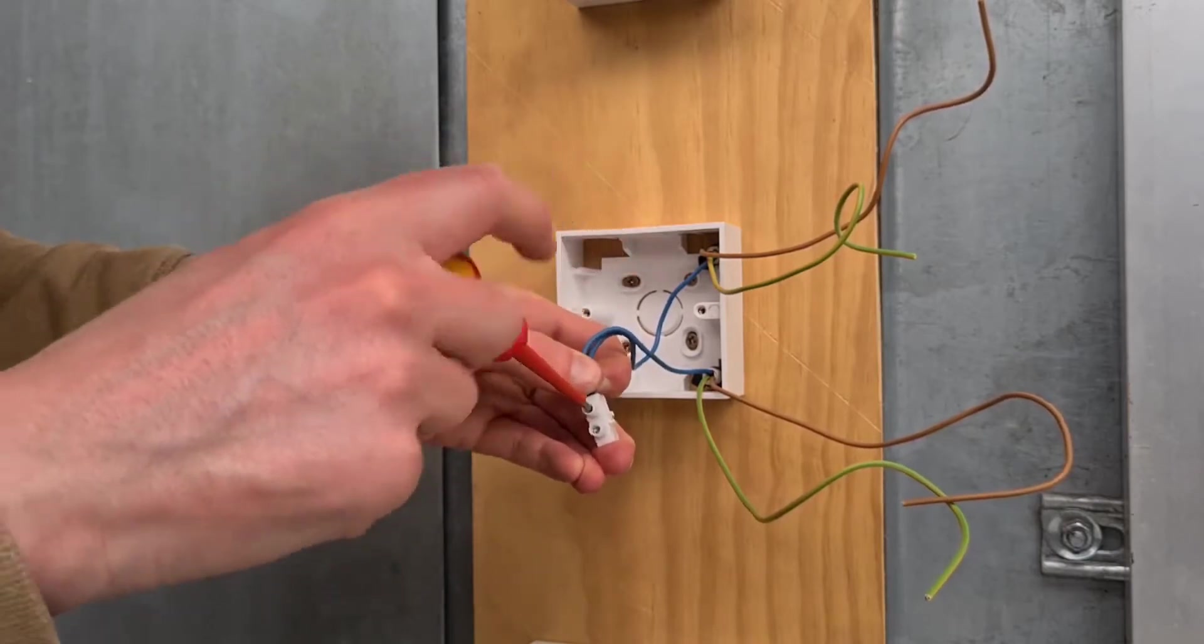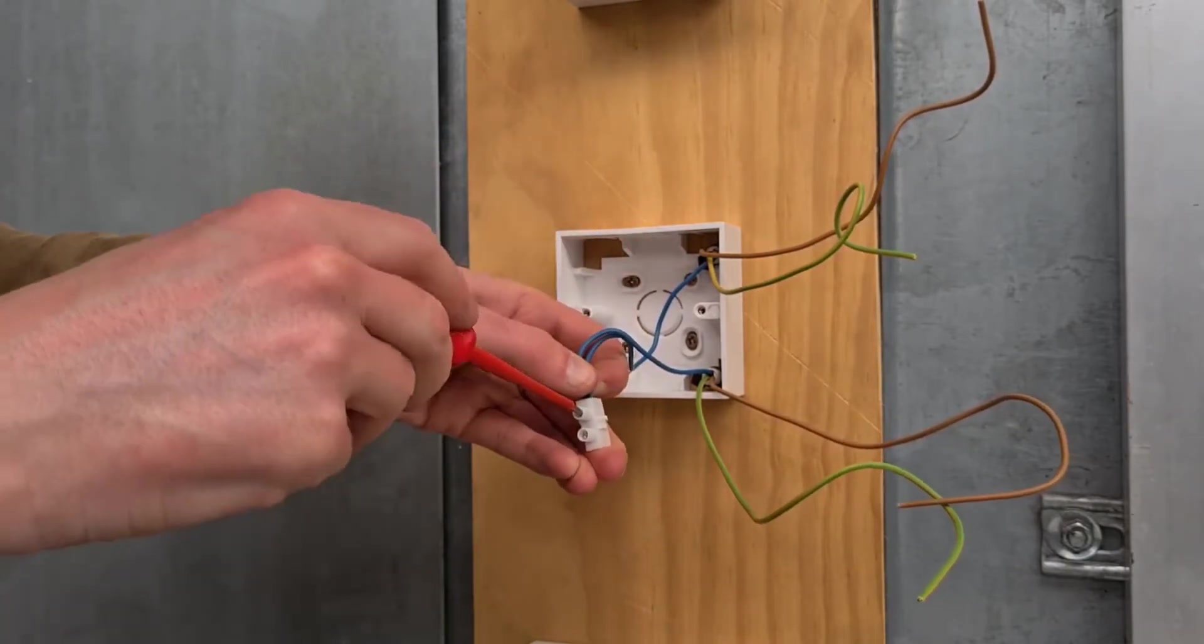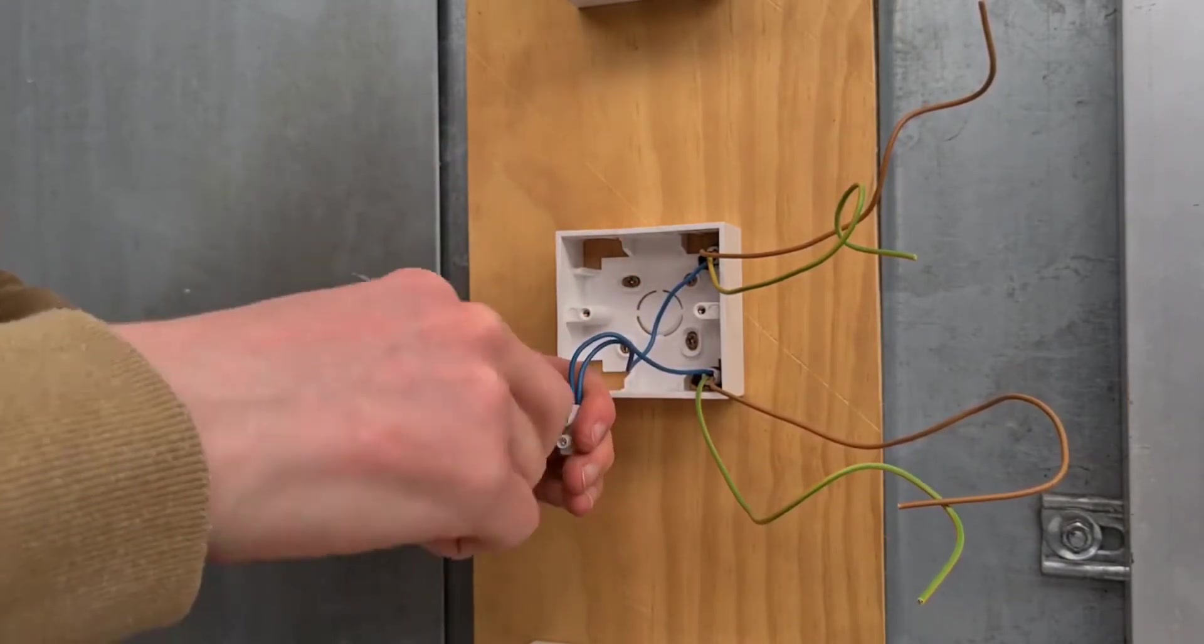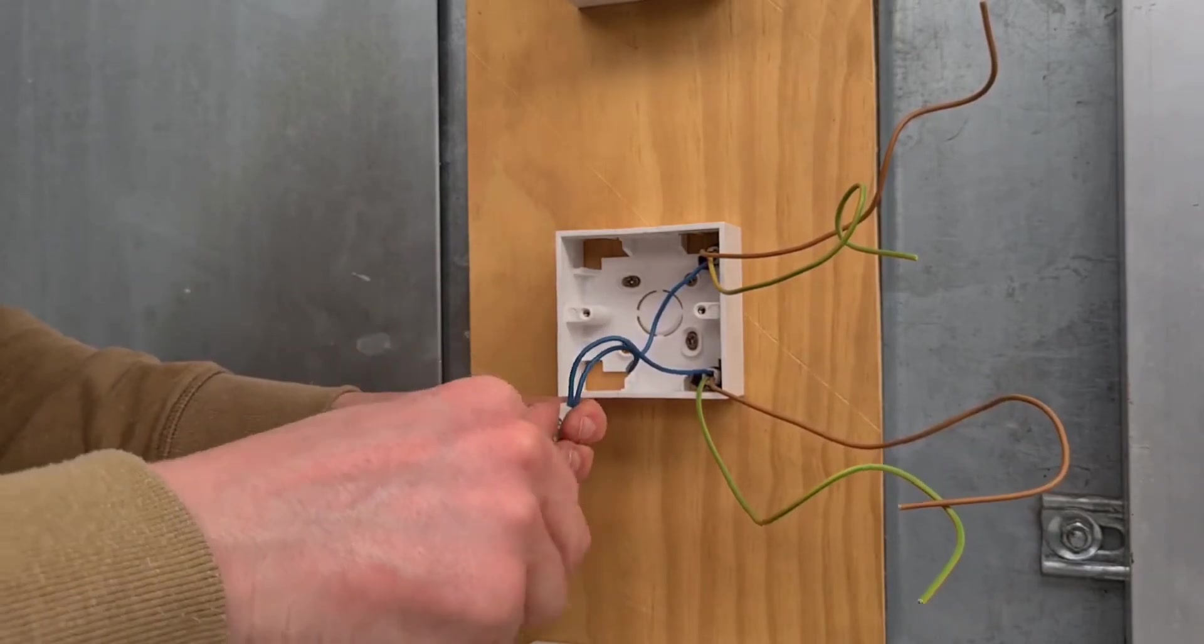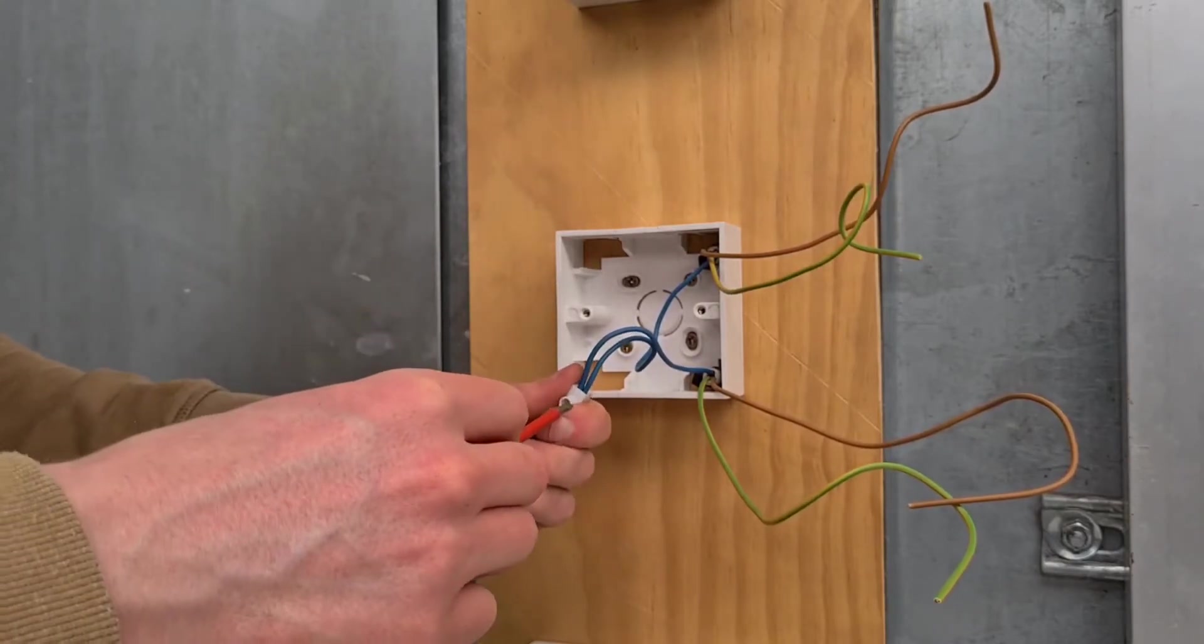The surface box has two cables with six cores in total. The first cable is the supply from the fuse spur, and the second cable is connected to the indoor lights.